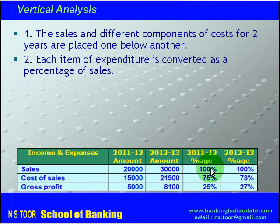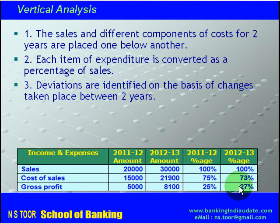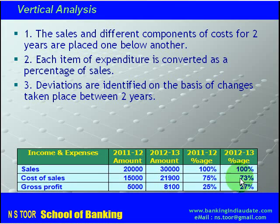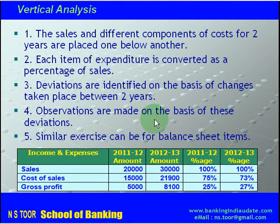Cost of sales is converted as a percentage of sales for both years. Similarly, gross profit has also been converted as a percentage of sales. Deviations are identified on the basis of the changes that have taken place between the two years, and observations are made. This type of exercise can also be carried out for balance sheet items.